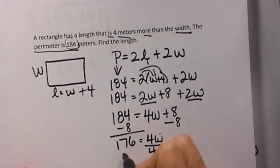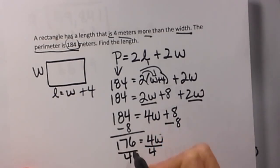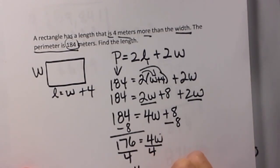Now let's see, that's 176 is equal to 4w. And then we want to divide by 4. When we divide by 4 that's going to go into it 44 times. So that is our width.